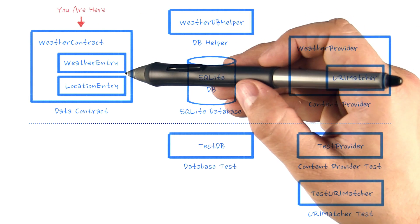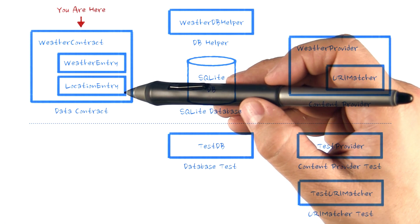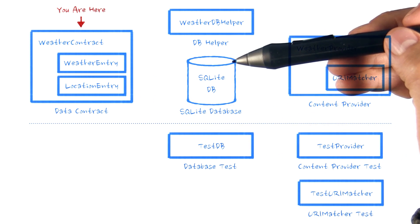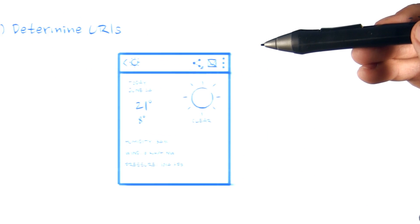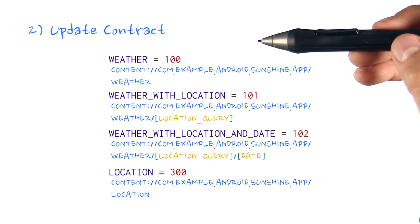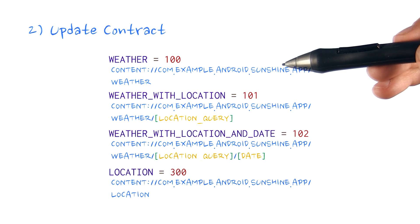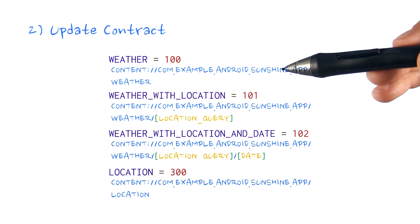Now it's time to go back to our weather contract. When we first described what a weather contract is, we said that it is an agreement between the data models, storage, and views, describing how information is accessed. In addition to the column names for our database, the contract is also a great place to define the URIs that our application will be using to access its data. Next, we'll explain what you need to add to your weather contract. When you've completed adding this code to your project, I'll explain a bit about what you've done.